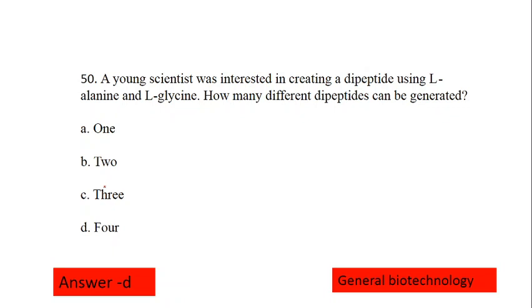A young scientist was interested in creating a dipeptide using L-alanine and L-glycine. How many different dipeptides can be generated. The first sequence is L-alanine L-alanine, second is L-glycine L-glycine, third is L-alanine and L-glycine, and fourth is L-glycine and L-alanine. In this way he is able to create four different dipeptides. The correct option is option number D.